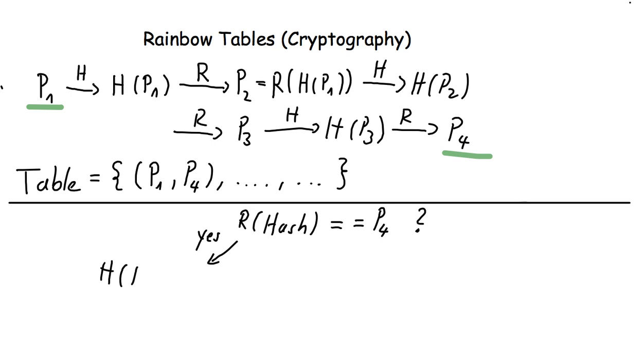So hash of p1 and then a reduction function and so on until he gets p3, which is the password that he was looking for.